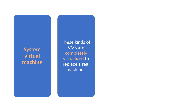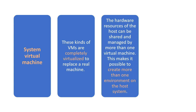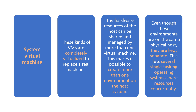System virtual machines are completely virtualized — they act as a separate system to replace a real machine. The hardware resources of the host can be shared and managed by the virtual machine, and more than one OS can be installed. This makes it possible to create more than one environment on the host system. Even though these environments are on the same physical host, they are kept separate, letting several single-tasking operating systems share the host's resources concurrently.